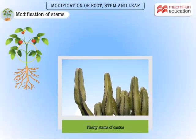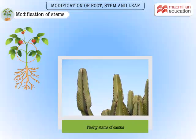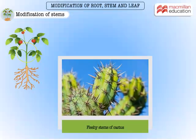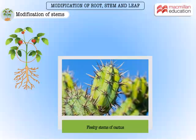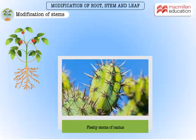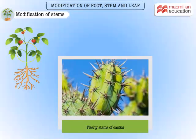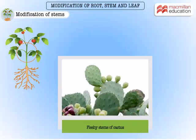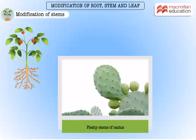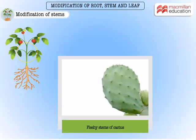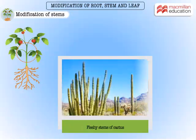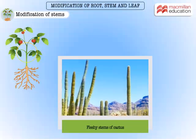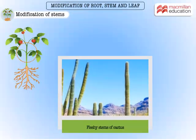Can you guess where the stem of this cactus plant is? Yes, the green part, which can be easily mistaken for a leaf, is actually a stem. It has nodes and spines. The thick green stem stores a lot of water, and these stems are modified to prepare food. This modification helps the plant to survive in dry desert conditions.